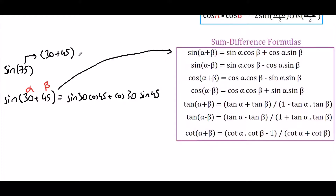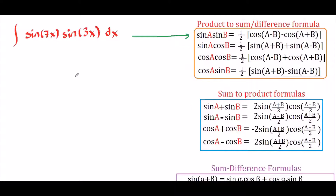Now let's go back to our integral. Here we have sine a times sine b. In our case, a is 7x and b is 3x. So we are going to apply the first formula: 1/2 times cosine of a minus b minus cosine of a plus b.